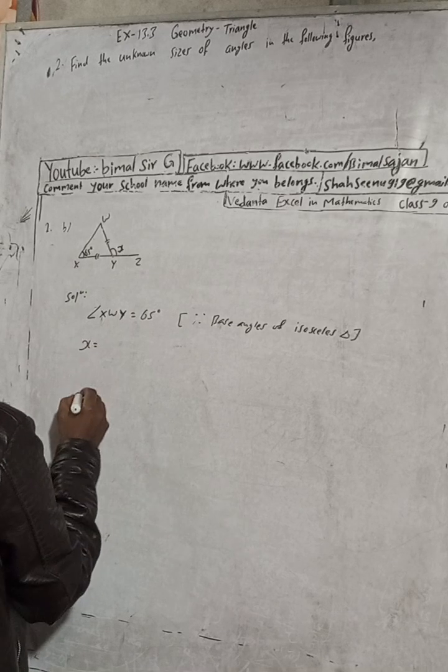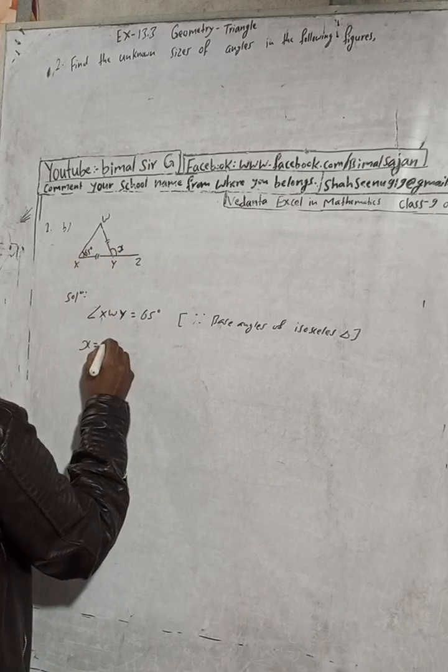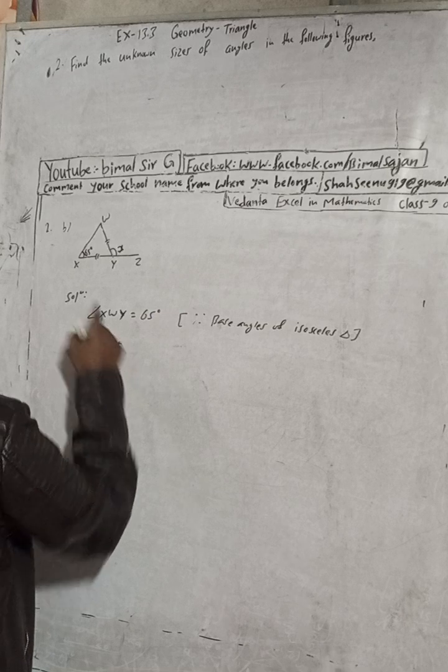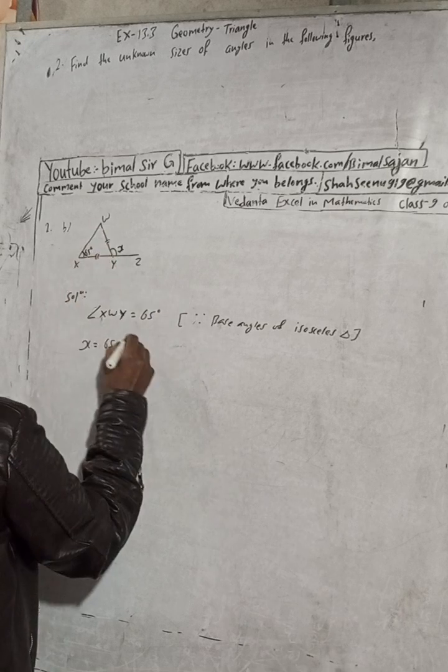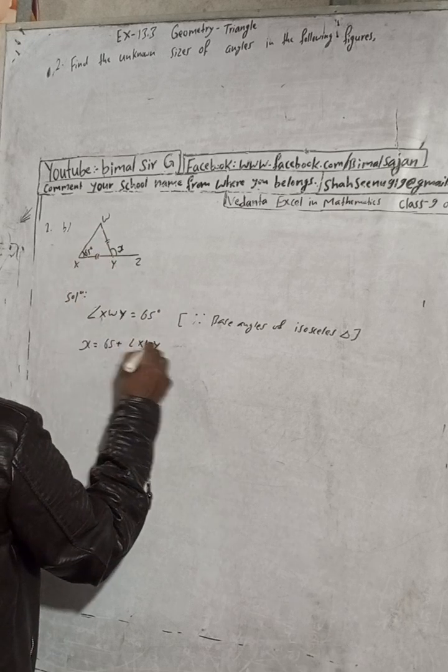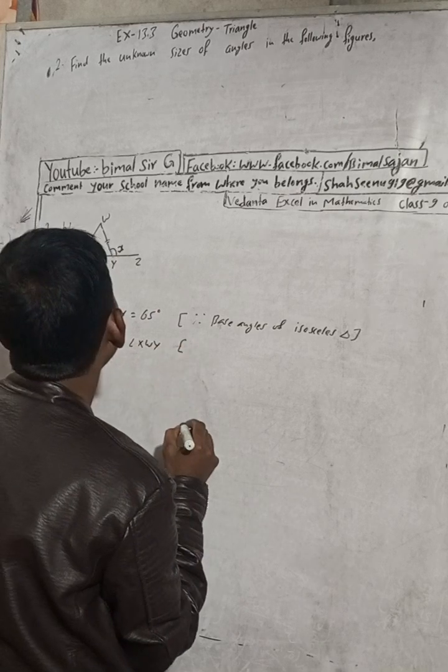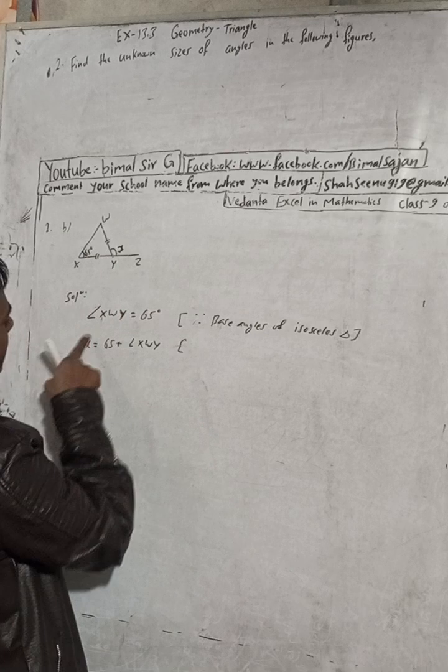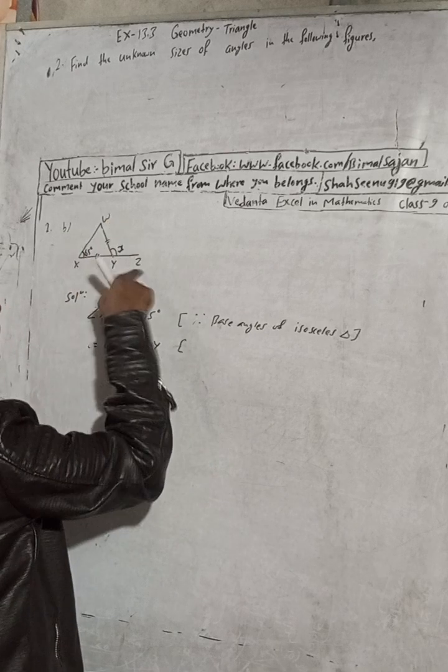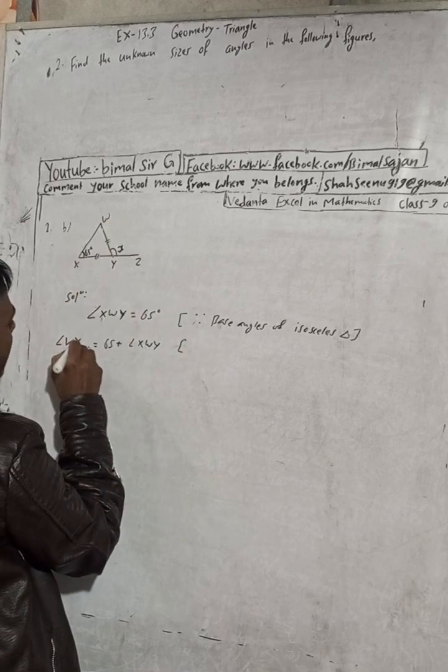So now, X is equal to 65 degrees plus this angle. This angle is XWY. Here I write this name, angle WYZ.